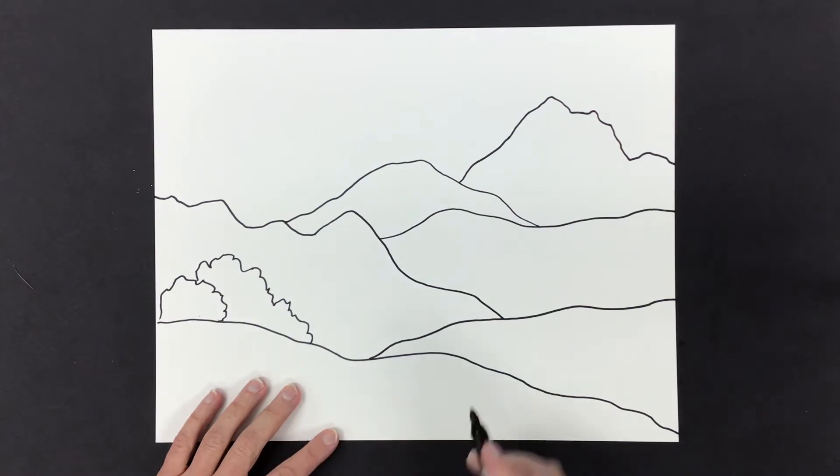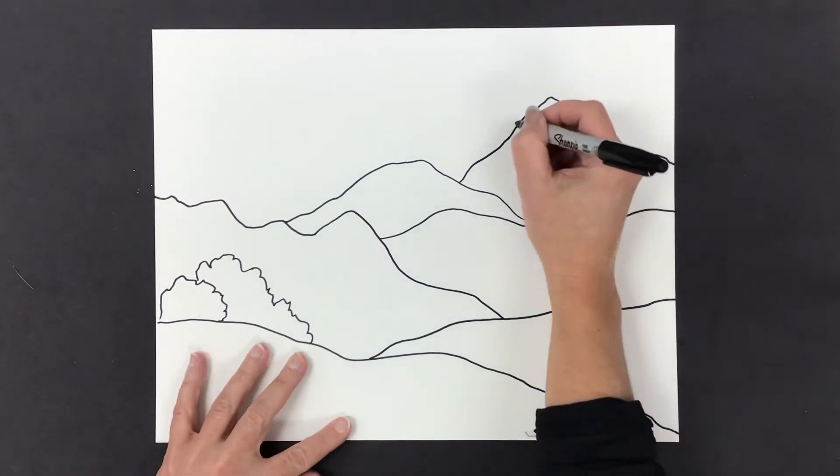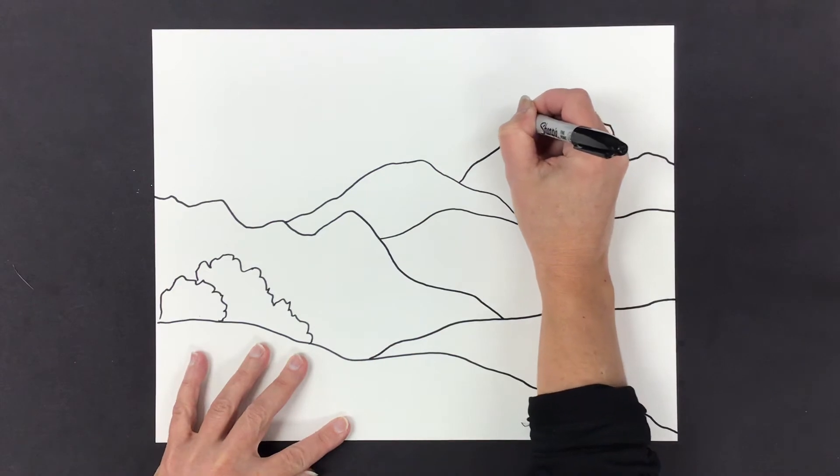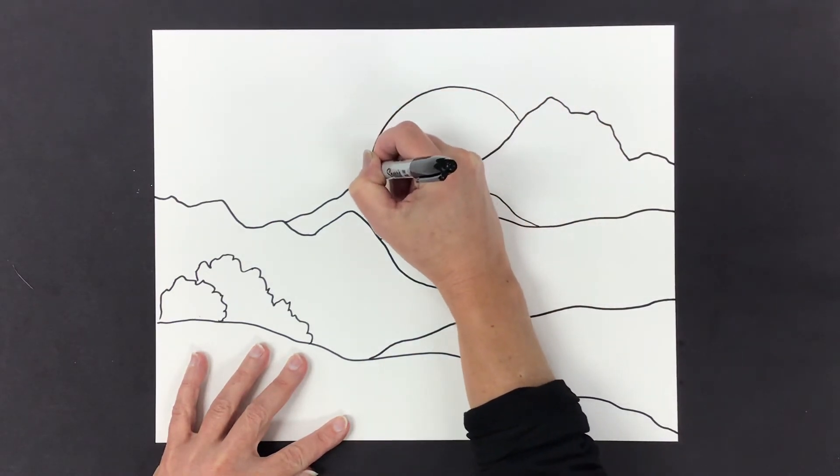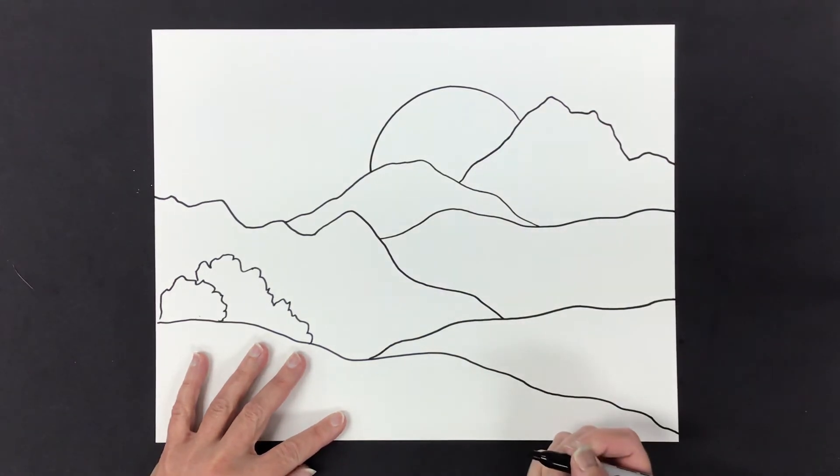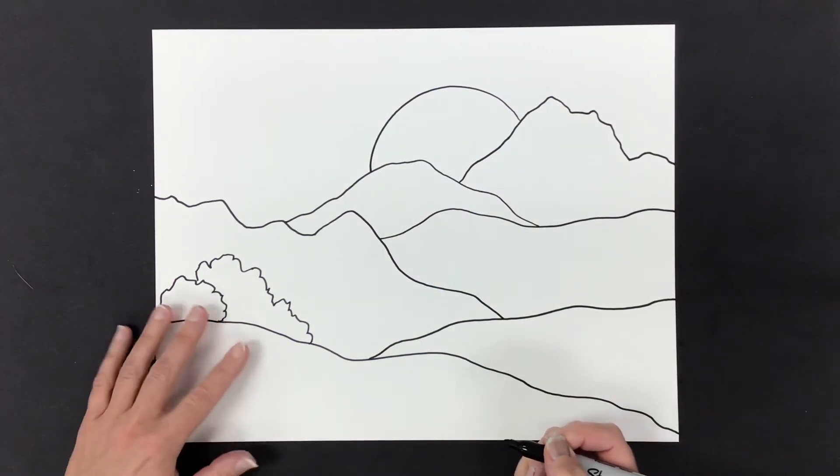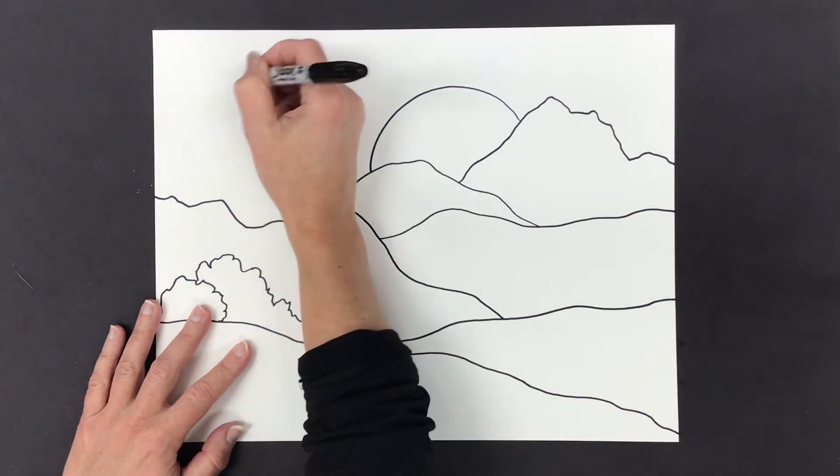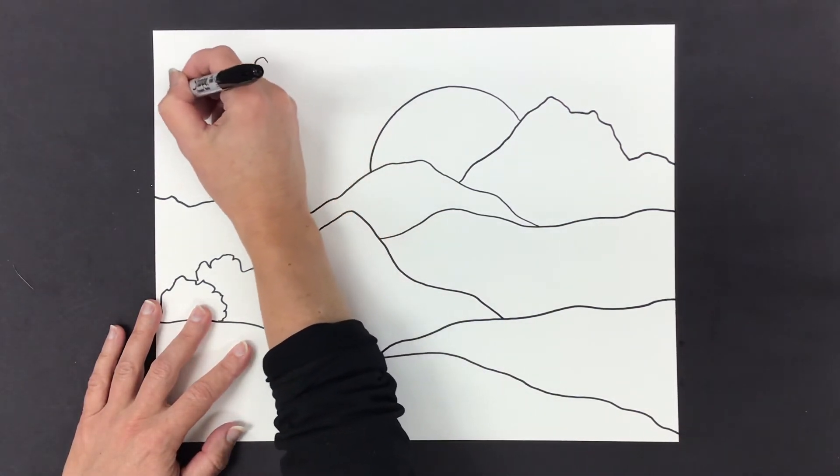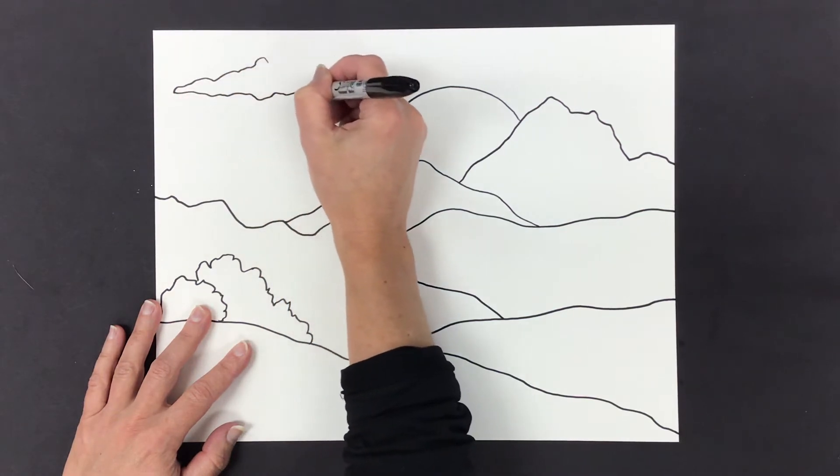Next, I'm going to add my sun setting over the mountains. I love when I see the beautiful sunset reflecting on top of clouds. So I'm going to make some clouds appear in the sky.